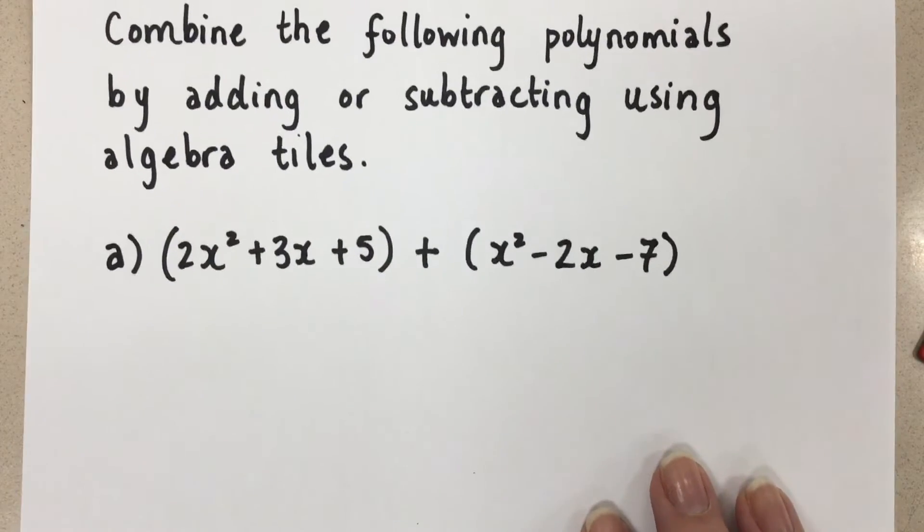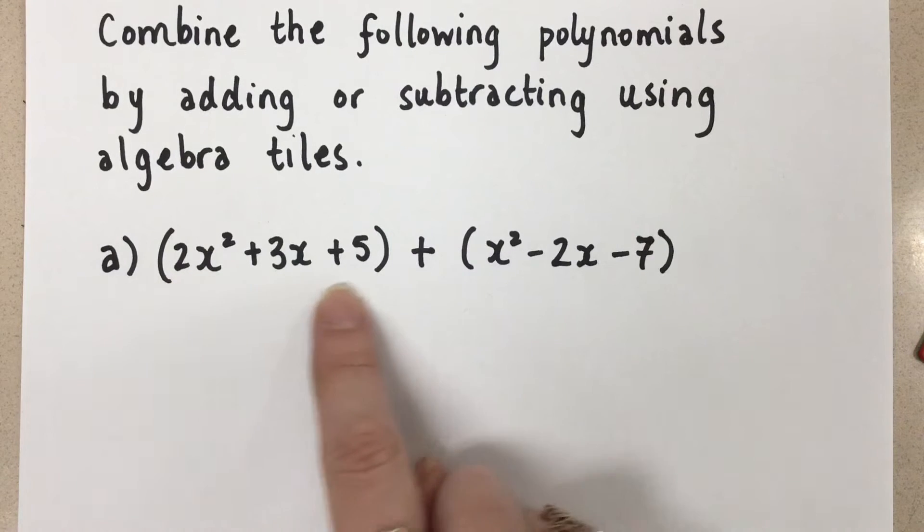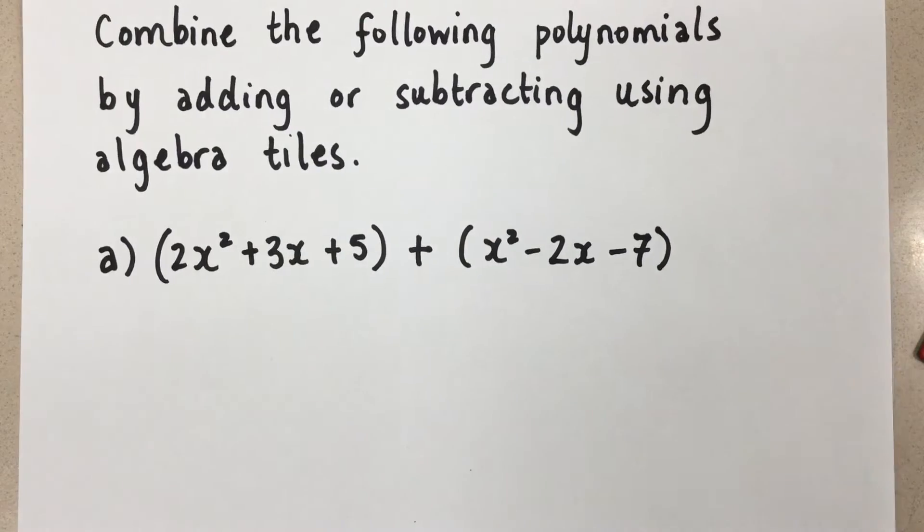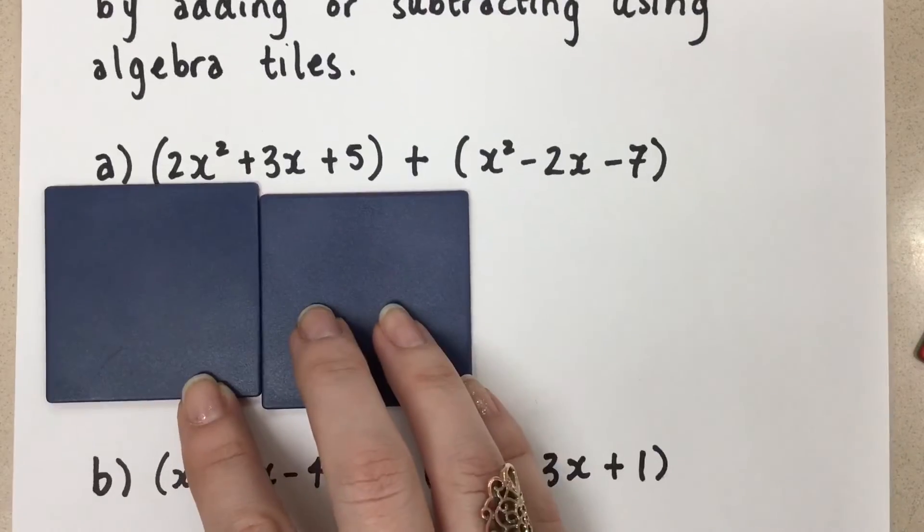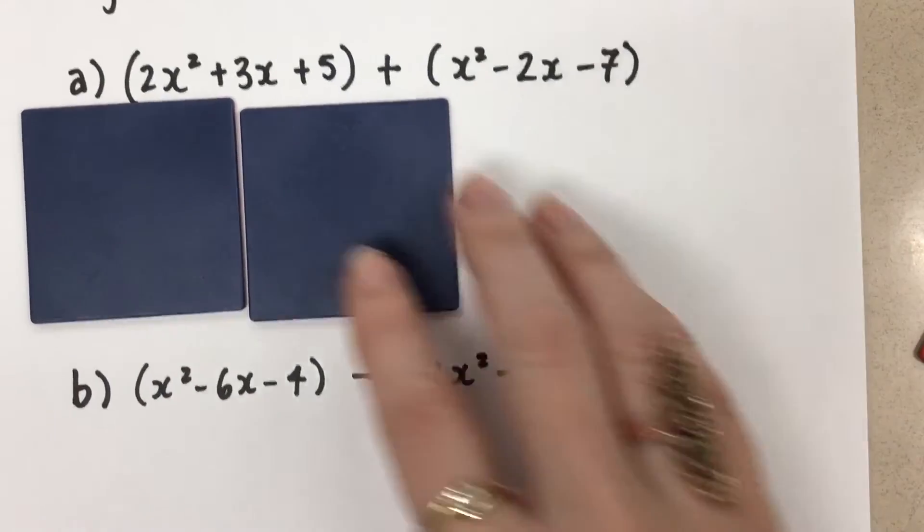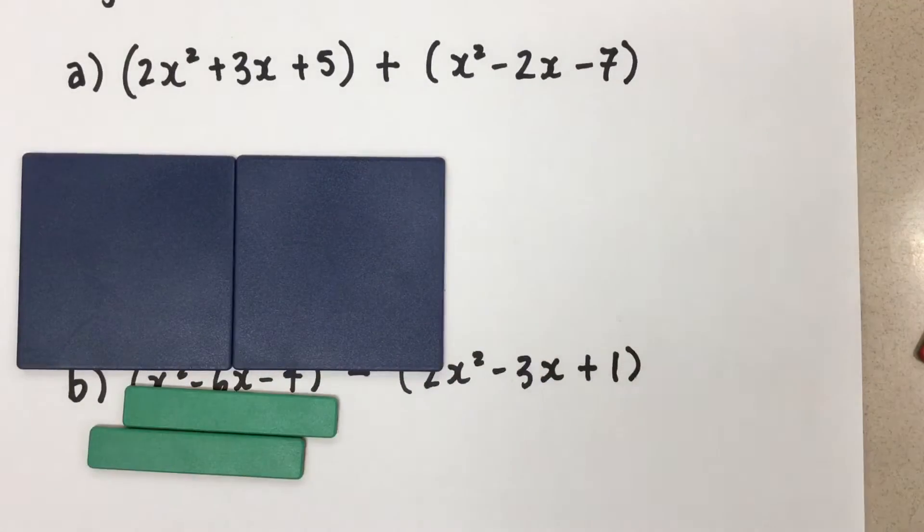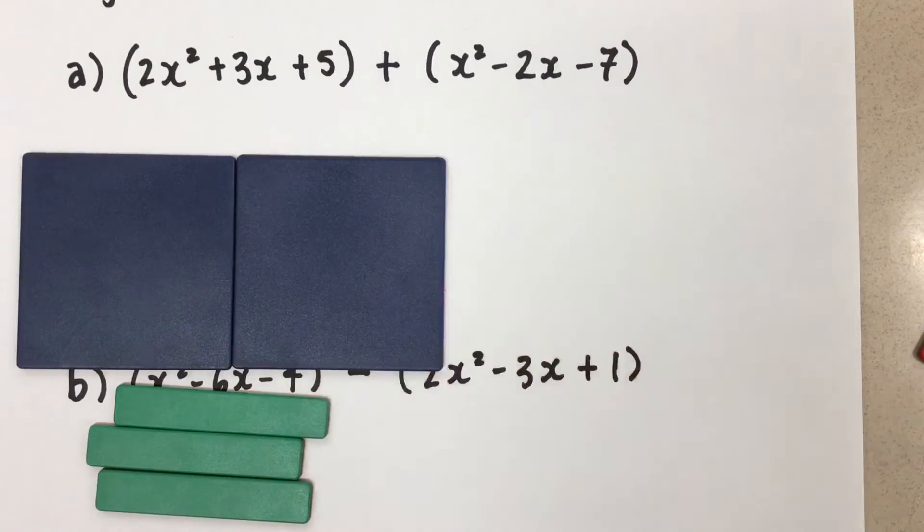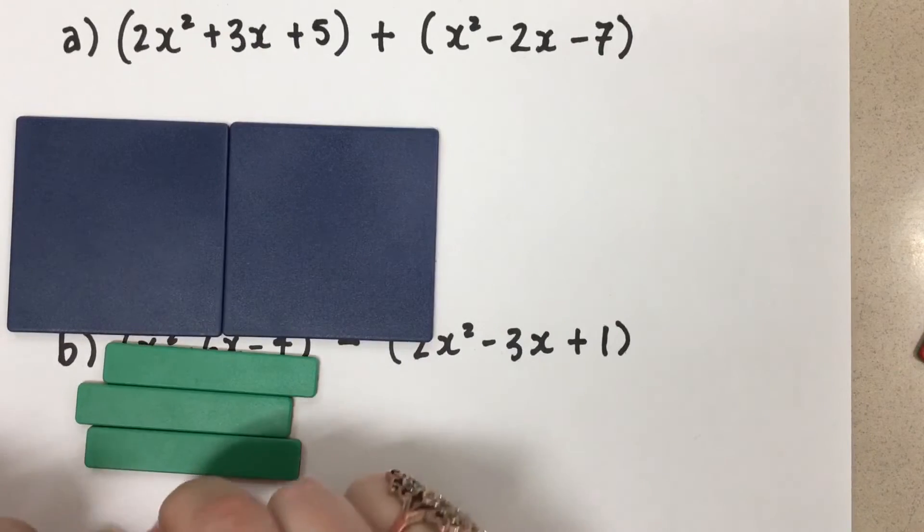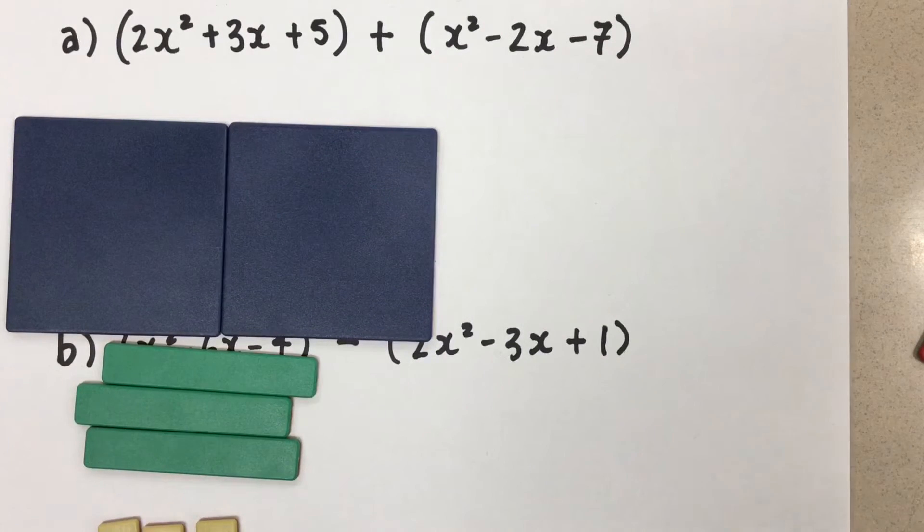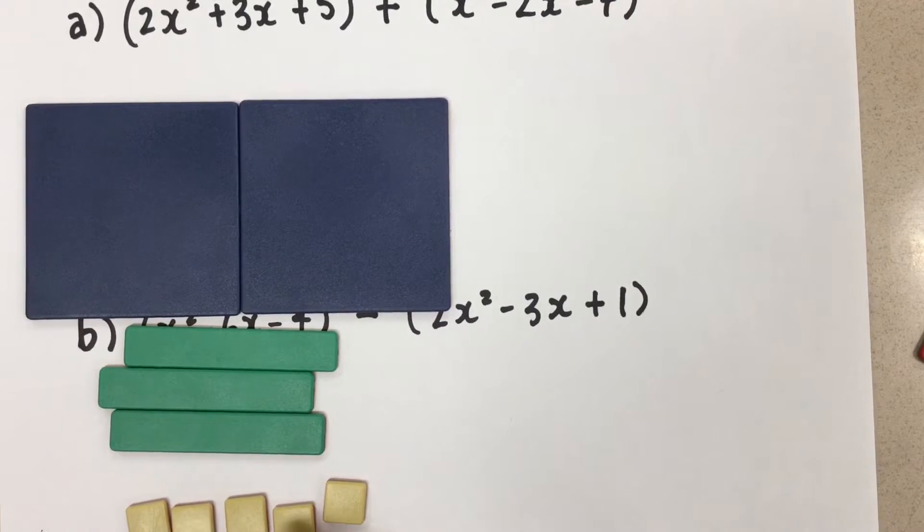So we want to begin by looking at the expression that we have. We have this polynomial plus this polynomial. So we're going to first get the tiles that represent this polynomial here. So that is 2x squared, and 3x. So there's 3 x's there, and then 5 ones. We want them to be positive. So there we have 2x squared plus 3x plus 5.